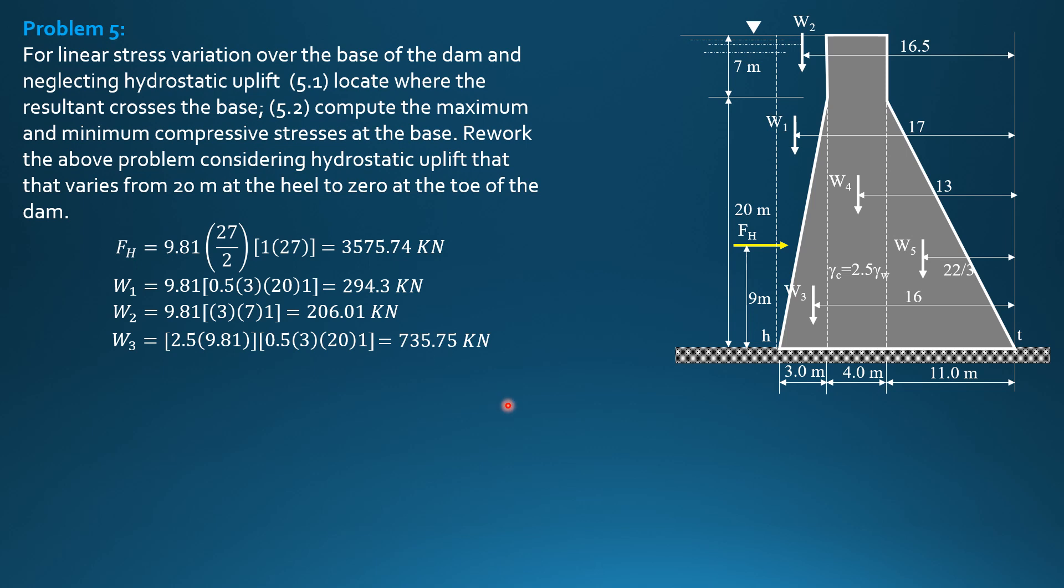735.75 kilonewtons. Weight 4 is masonry, quantity 2.5 times 9.81 times 4 times 27 times 1, so it is equal to 2648.7 kilonewtons. Weight 5 is masonry, so 2.5 times 9.81 times quantity 0.5 of 11 times 20 times 1. So it is 2697.75 kilonewtons.